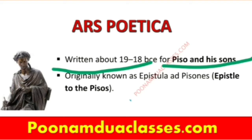Piso's full name was Lucius Calpurnius Piso. He was a Roman senator and consul and a good friend of Horace. The work was dedicated to his two sons as well and it was called Epistle to the Pisos.